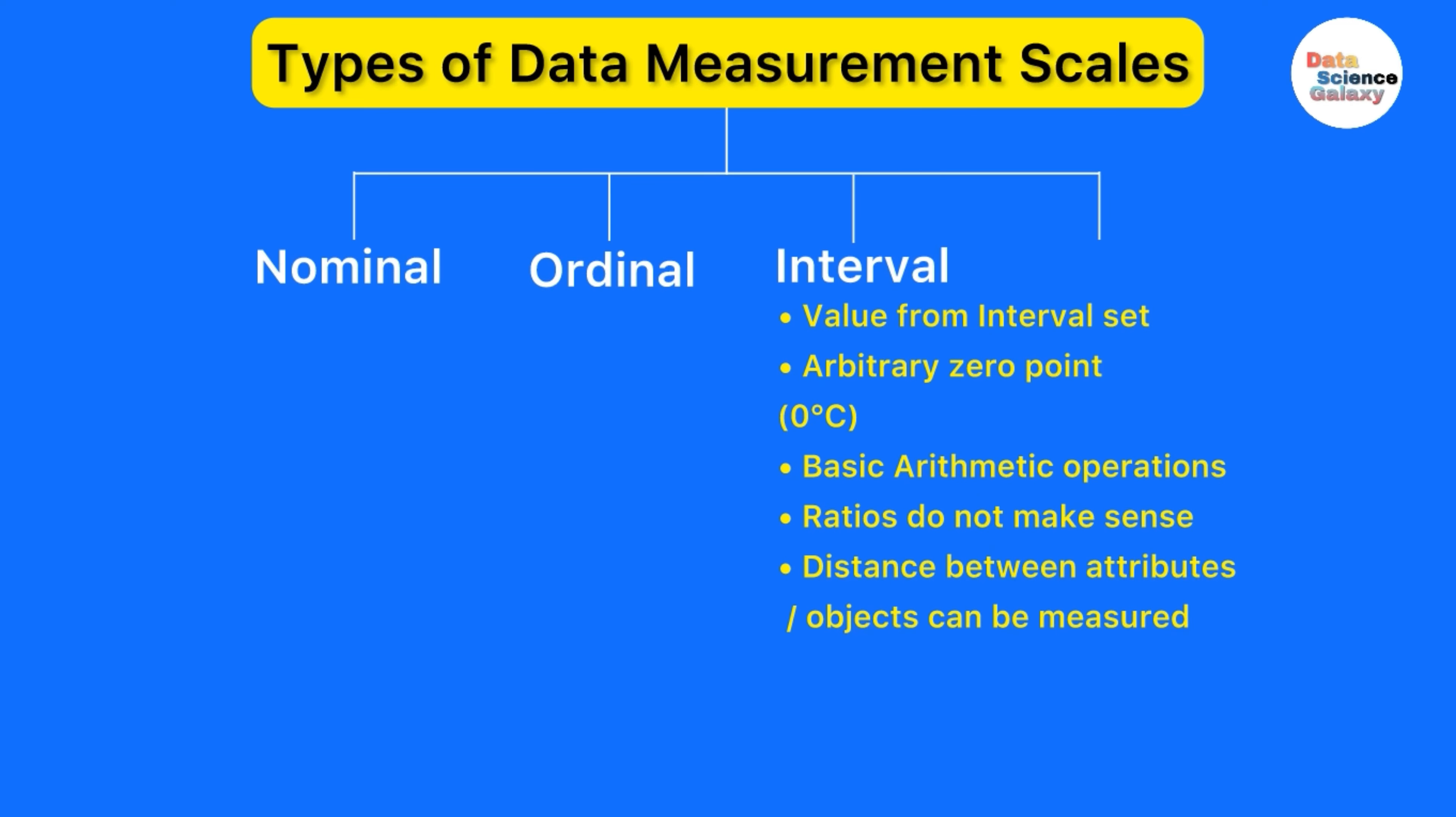Let's just move on to interval scale. Here the variable gets its value from a defined interval set. Some of the examples for interval scale are IQ score, intelligent quotient score, and temperature measured in degree Celsius. Here arbitrary zero point is applicable.